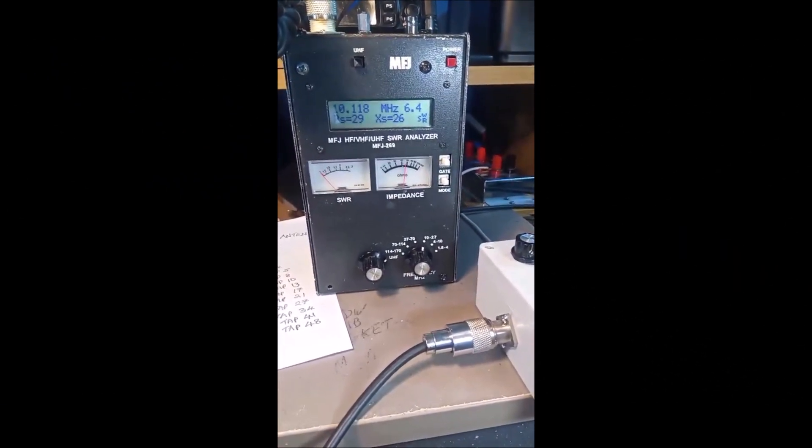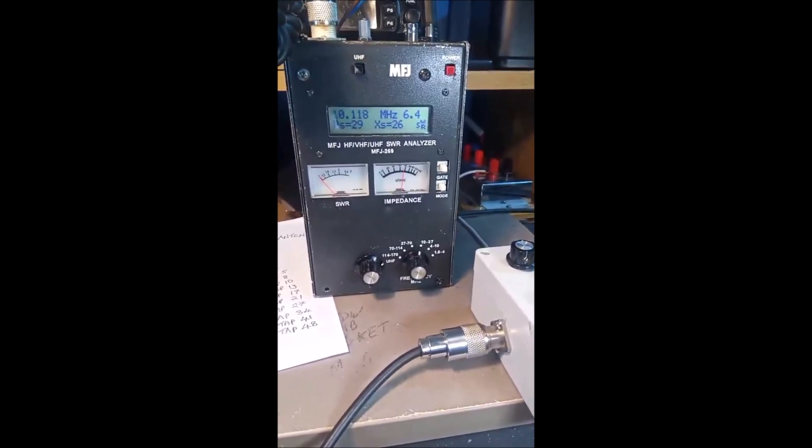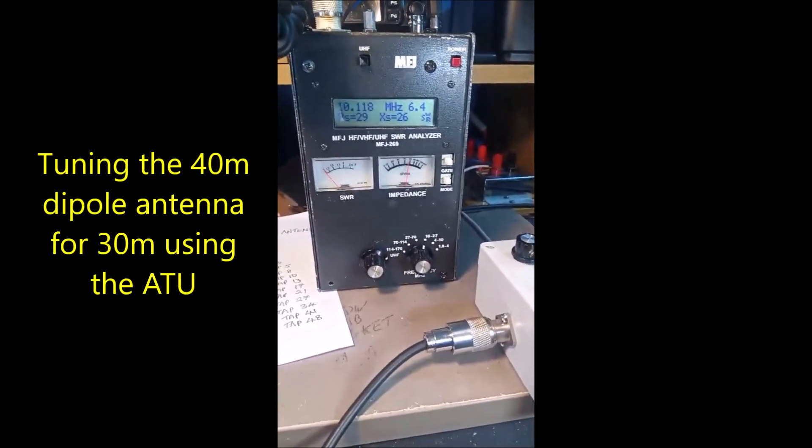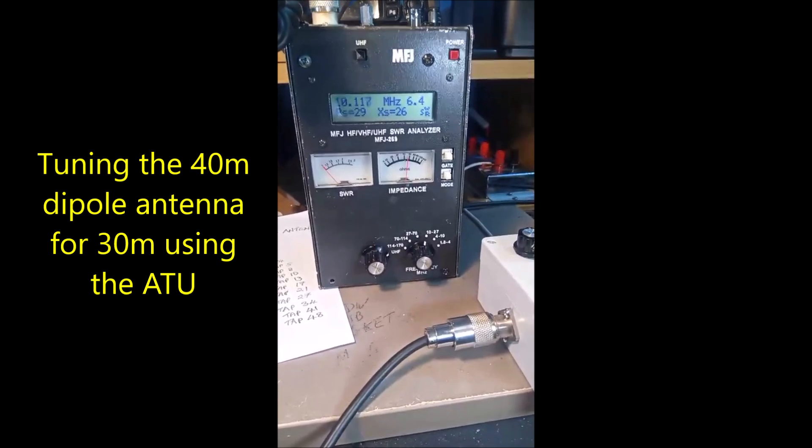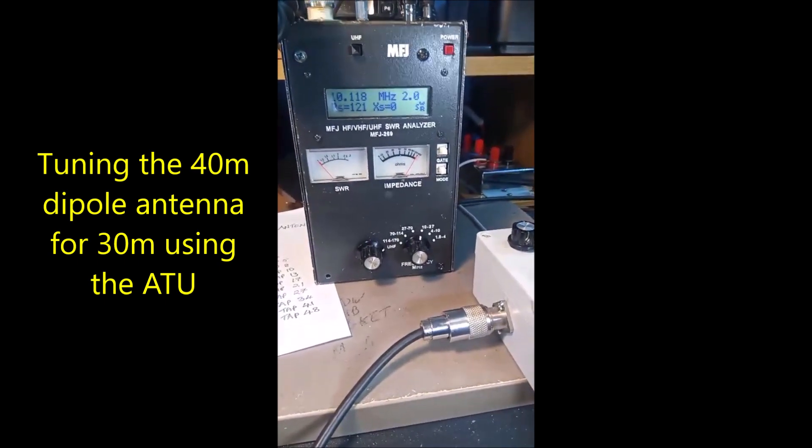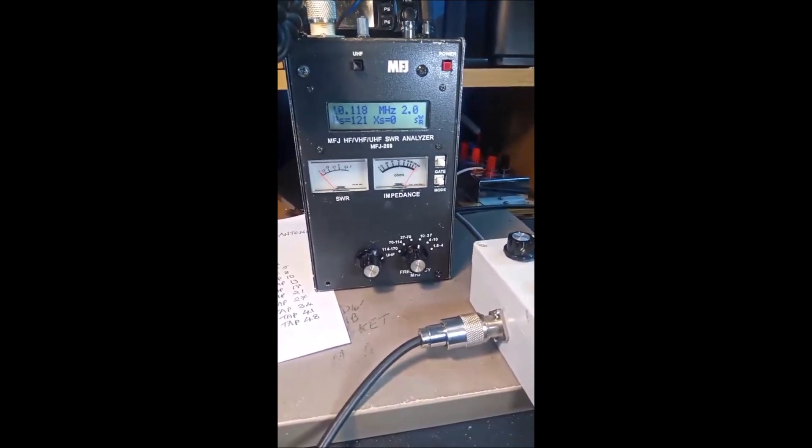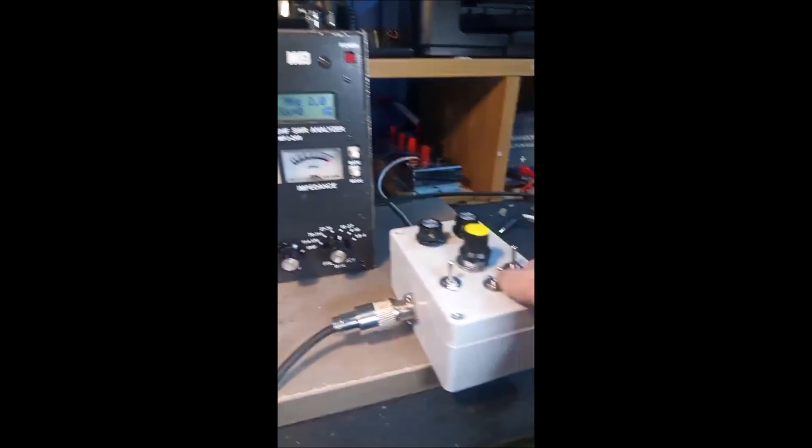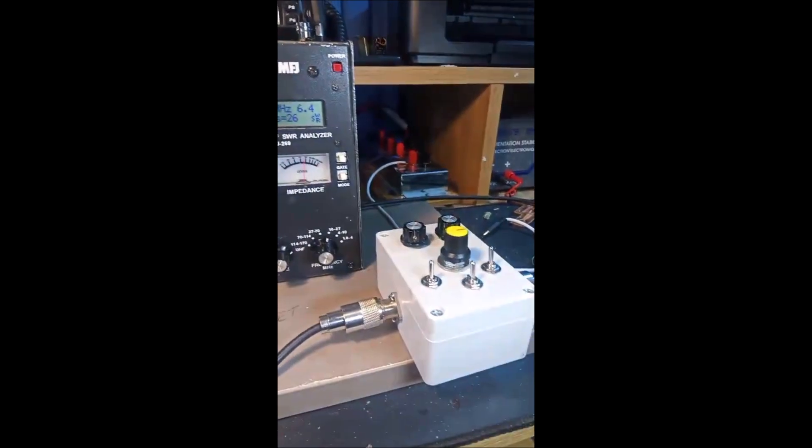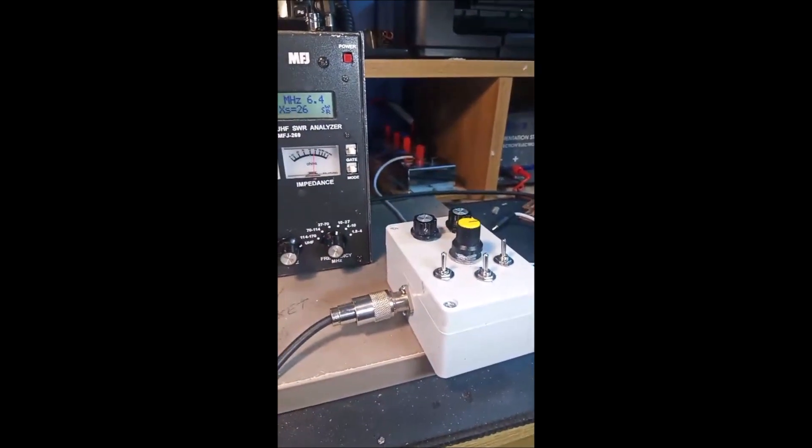For this clip I'm on the 30 meter band, and in bypass mode let's see what the SWR is. It's two, which isn't too bad, two to one, but I want to get it down to as near one to one as possible. So I'm going to switch in the ATU.